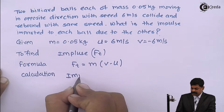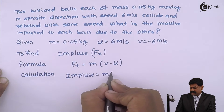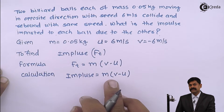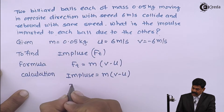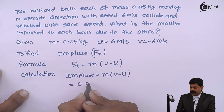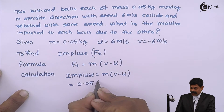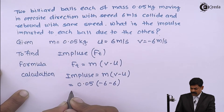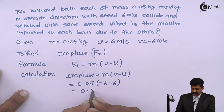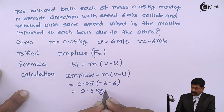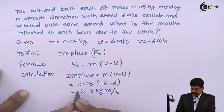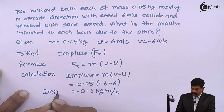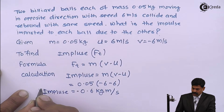Impulse equals mass into (final velocity minus initial velocity). Mass is 0.05 kg, final velocity is minus 6 and initial velocity is 6, so impulse equals minus 0.6 kg meter per second. So the impulse imparted to each ball is minus 0.6 newton second.